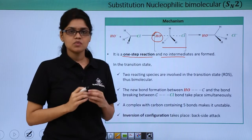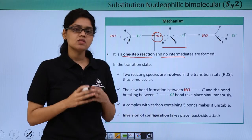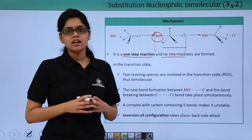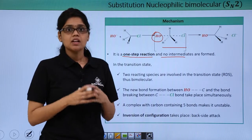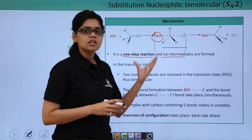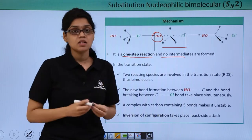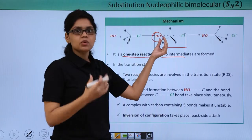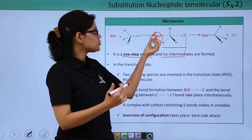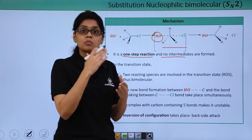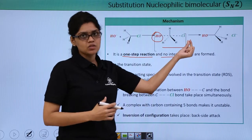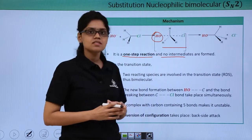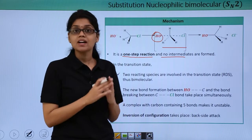This is essentially the reason why the rate-determining step depends on both the concentration of the nucleophile as well as the alkyl halide, thus making the RDS bimolecular. You can also note that this particular transition state is highly unstable as carbon is bonded to five atoms — that is, bond formation between the nucleophile and the carbon atom (the C–O bond) and bond breaking between the carbon atom and the halogen atom take place simultaneously, giving five bonds in the transition state.